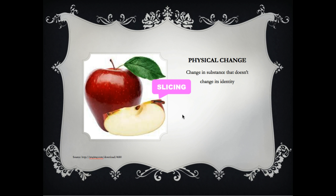Other examples of physical changes include flattening an object, ripping or tearing, adding color, bending, and crushing. We can do all of these things to affect the shape or form, but we are not changing the actual composition of the substance.